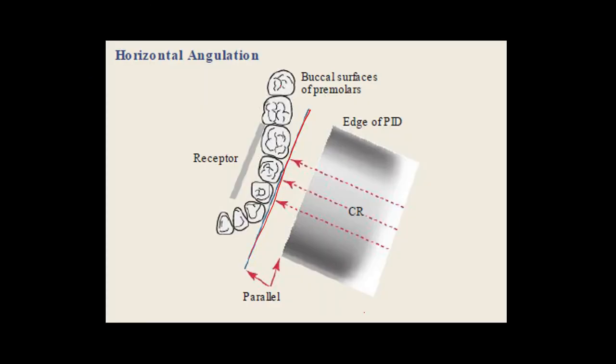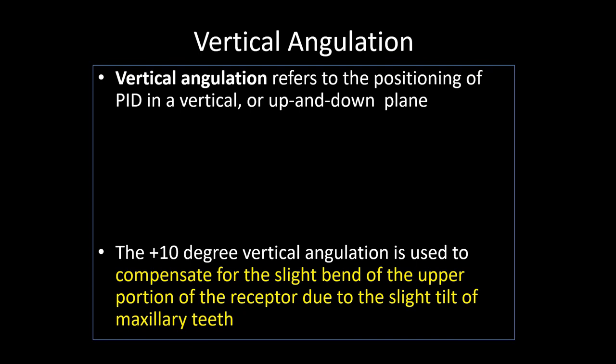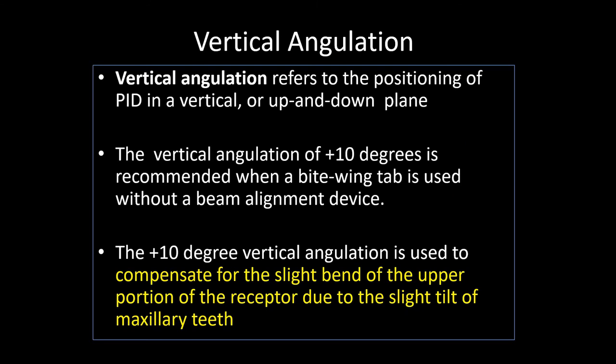The central ray is perpendicular to the tangent of the curvature of the arch. Vertical angulation refers to the positioning of the PID (position indicating device) in a vertical or up-and-down plane. A vertical angulation of plus 10 degrees is recommended when a bitwing tab is used without a beam alignment device, to compensate for the slight bend of the upper portion of the receptor due to the slight tilt of the maxillary teeth, which are slightly buccally tilted compared to the mandibular teeth.